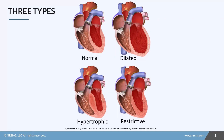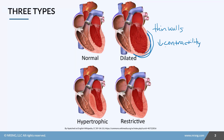In dilated cardiomyopathy, you can see that the muscles of the ventricles have enlarged and almost ballooned out. The muscles get stretched out, giving you really thin walls of the ventricle — it's like an overused rubber band. If you stretch it too much, it can't contract back like it's supposed to, so you get decreased contractility, which leads to decreased cardiac output.